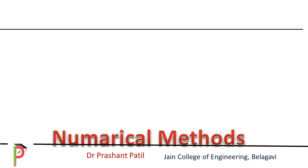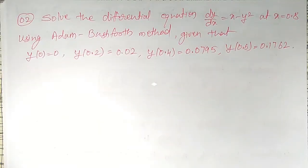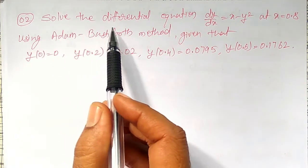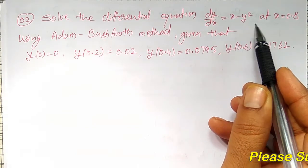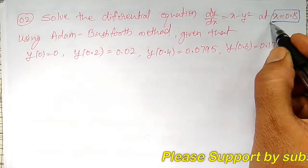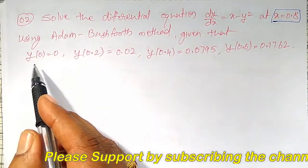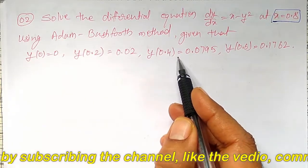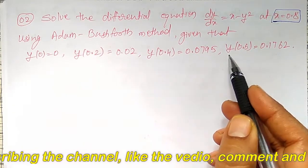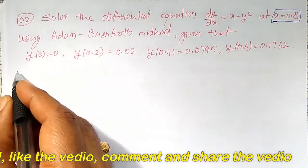In this video, another simple example on Adam Bashforth method I am going to solve here. That is: solve the differential equation dy/dx equal to x minus y² at x equal to 0.8 using Adam Bashforth method. Given that y(0) = 0, y(0.2) = 0.02, y(0.4) = 0.0795, y(0.6) = 0.1762.